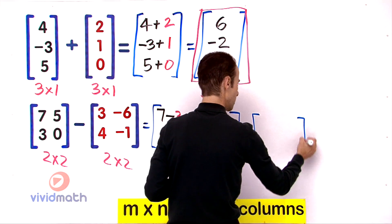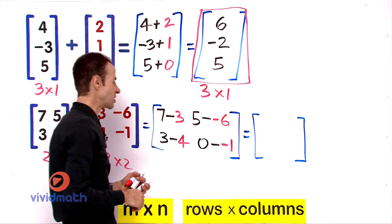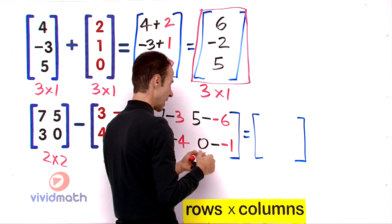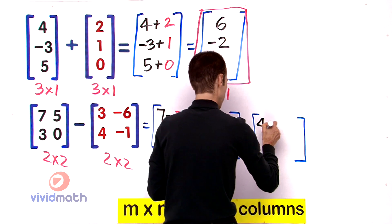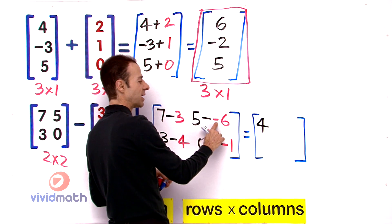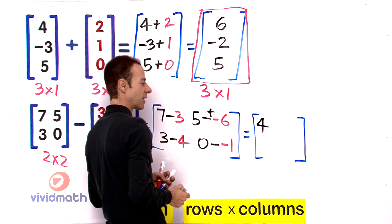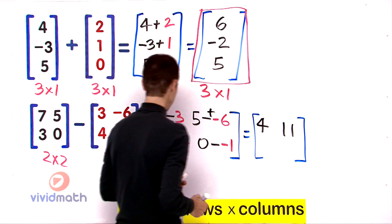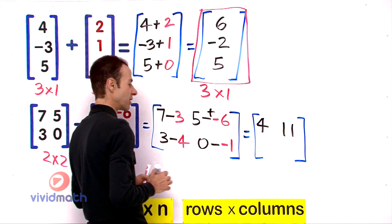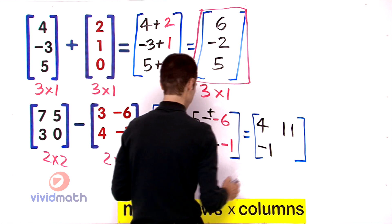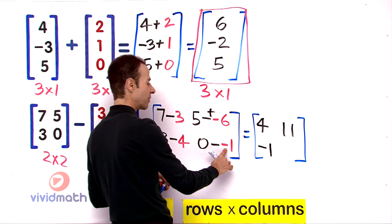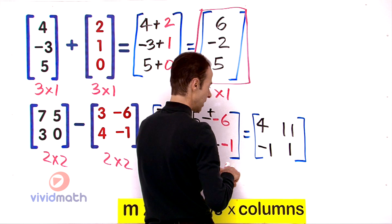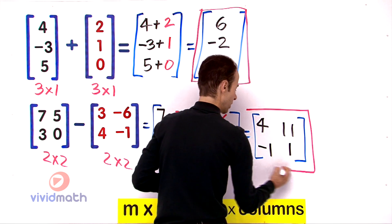Let's simplify. The answer will be a two by two, as the original matrices are also two by two. Seven take away three gives us four. Five take away negative six — two negatives make a plus — five plus six is positive eleven. Three take away four gives us negative one. And zero take away negative one — two negatives give a positive — so that is positive one. That is our answer.